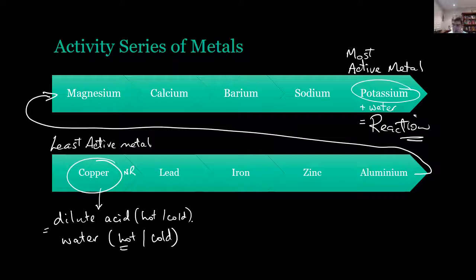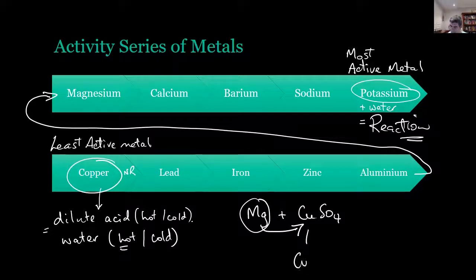We could also add a metal to a solution of another metal. If, for example, we were to add some magnesium into a solution of copper sulfate, what we would find is that because the magnesium is more reactive, it actually pushes the copper out of the solution. And so we would be able to find copper coming out as a solid.